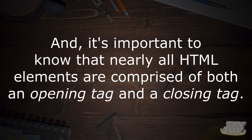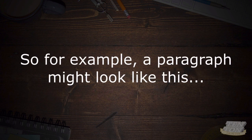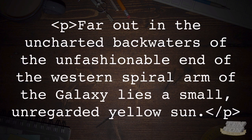It's important to know that nearly all HTML elements are comprised of both an opening tag and a closing tag. For example, a paragraph might look like this. The paragraph element's opening tag starts with an open angle bracket, followed by the element itself — in this case P for paragraph — and then a closing angle bracket. Then we have the contents of the paragraph element, followed by the closing paragraph tag: open angle bracket, forward slash P, close angle bracket.